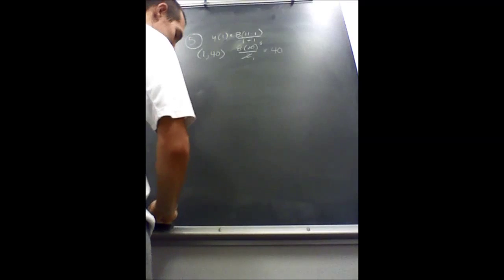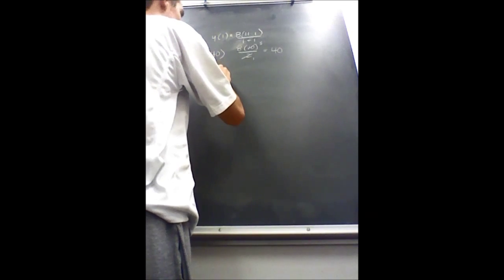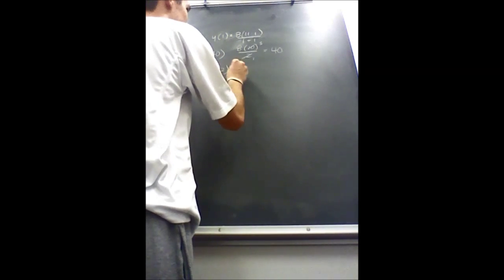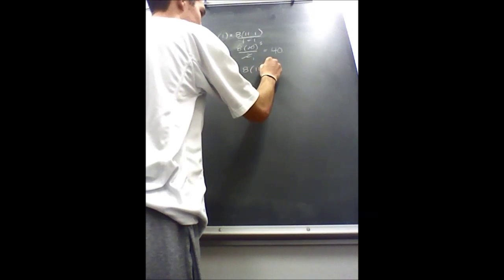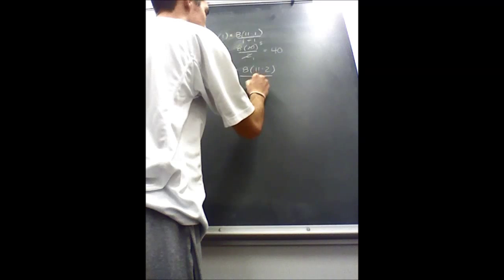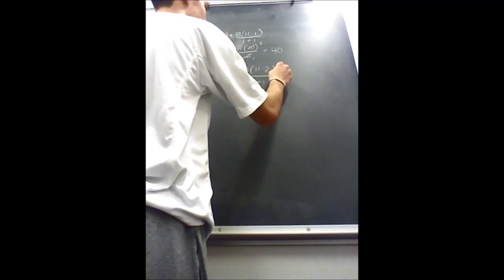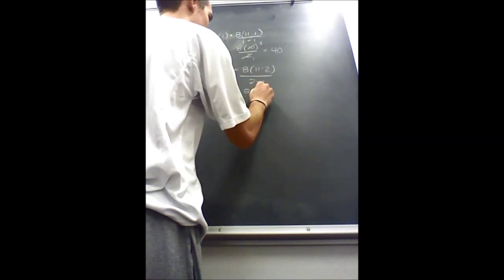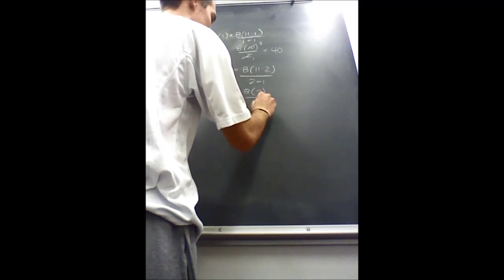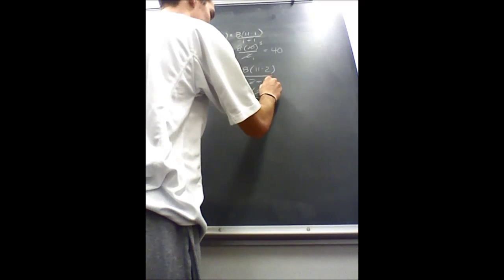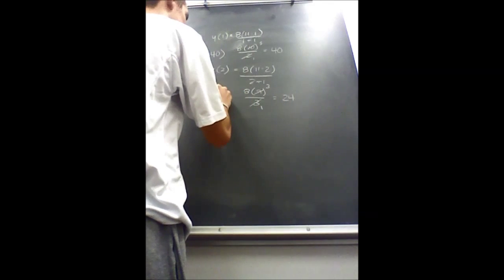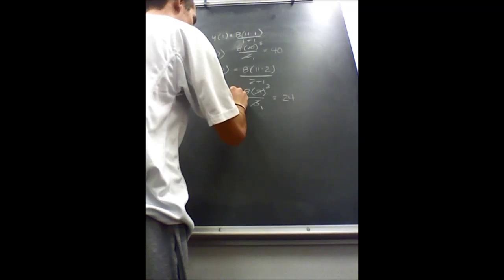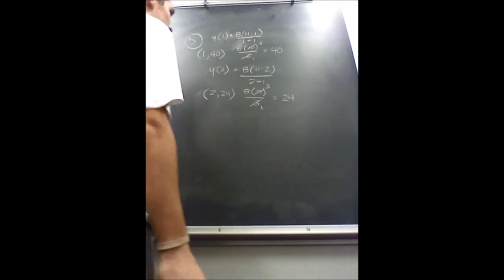You continue this process for the integers that follow. You try 2, and you get 8 times 9 over 3. The 3 and the 9 cancel, leaving you with 24, which means 2, 24 also works.